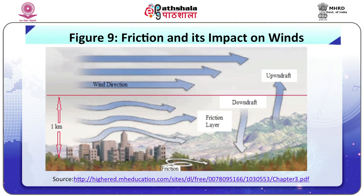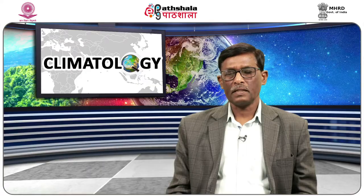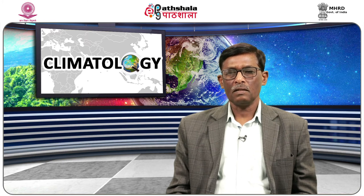Coming to frictional force: the surface of the earth, particularly the land surface, is rugged and has great friction in the form of undulating surfaces. Different types of land features, buildings, plants and trees all obstruct the free flow of air. The friction is maximum at or near the surface — in other words, at the earth-air interface.